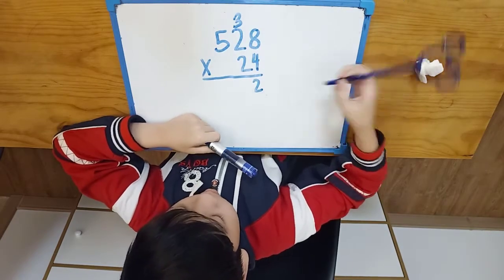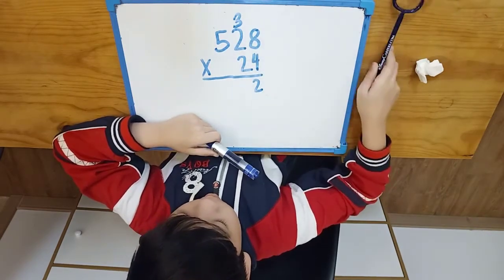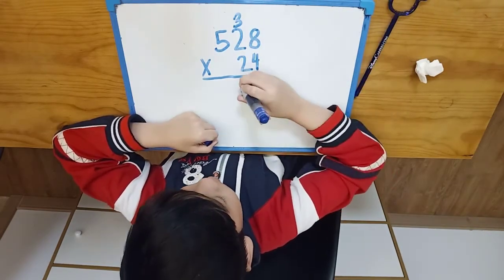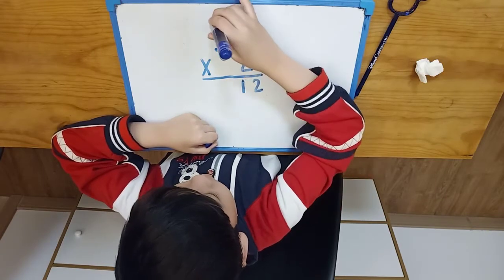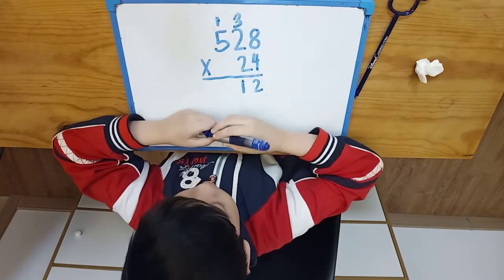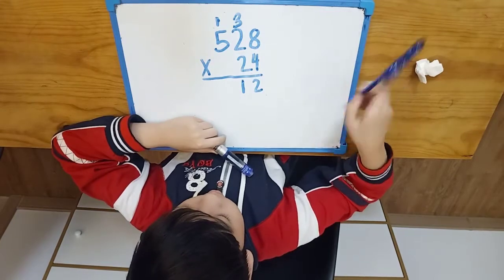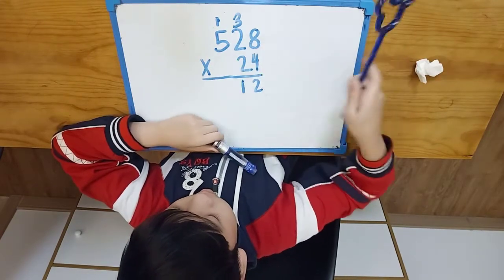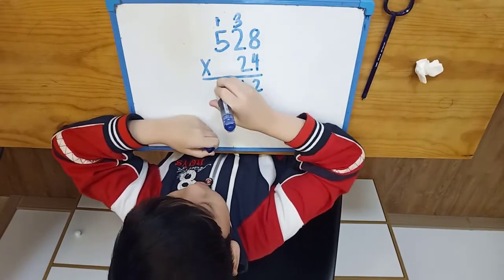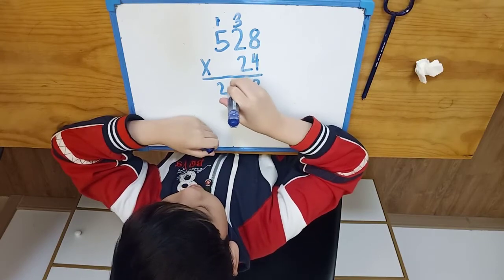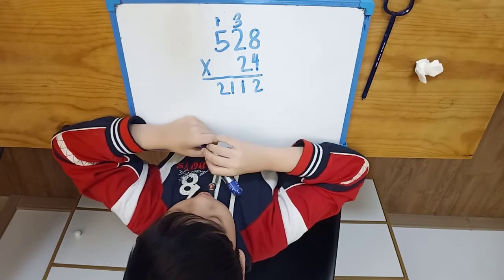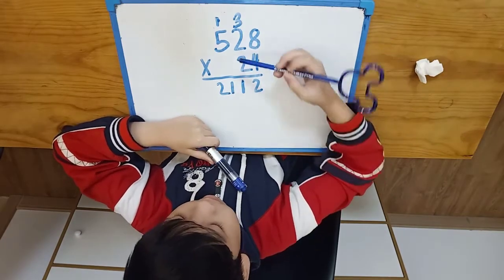4 times 2 is 8, plus 3 is 11. Carry 1. 4 times 5 plus 1 is 21.